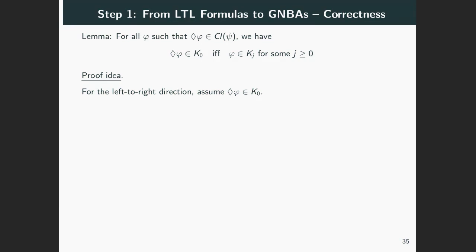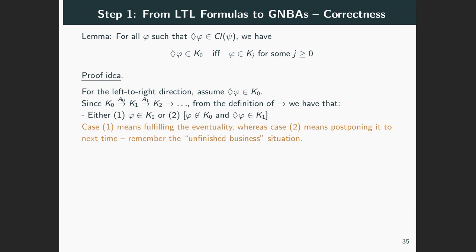First, let's assume that eventually φ is in K₀. Since consecutive Kᵢ's transit through the Aᵢ's, using the definition of the transition relation in our automaton, we have two cases. Either φ is in K₀, or φ is not in K₀ and eventually φ is in K₁. A note here in terms of our discussion of unfinished business from before in relation to scenarios: what we have here is that case one fulfills the eventuality, whereas case two postpones it to next time.